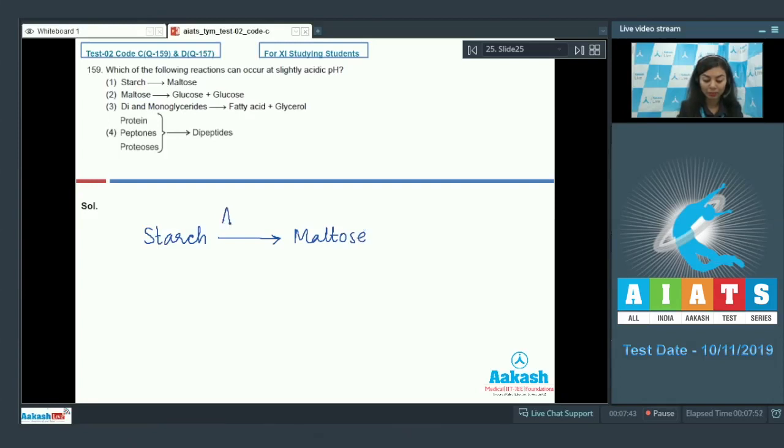When starch is getting converted into maltose, an important enzyme is salivary amylase, which acts optimally at a pH of 6.8, which is slightly acidic. The right answer is option number 1, whereas the remaining options take place in small intestines, which provide an alkaline environment.